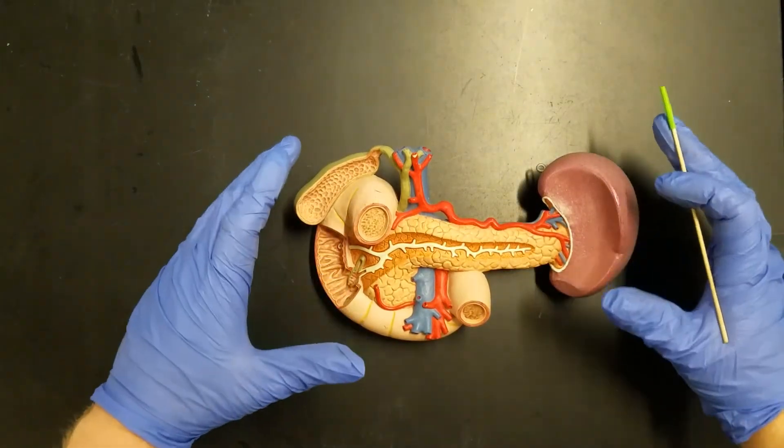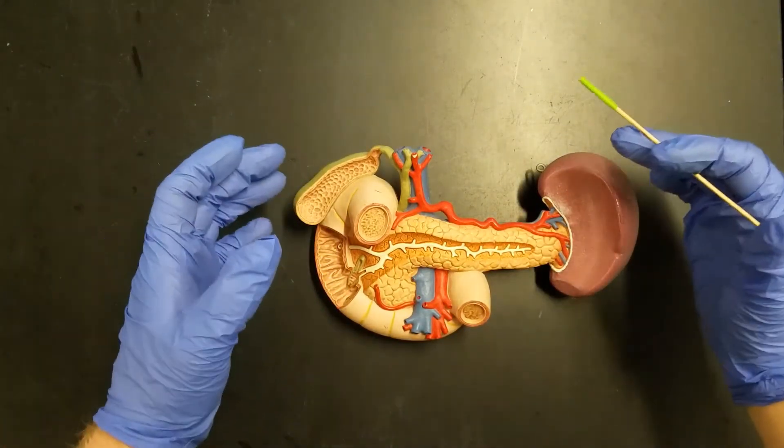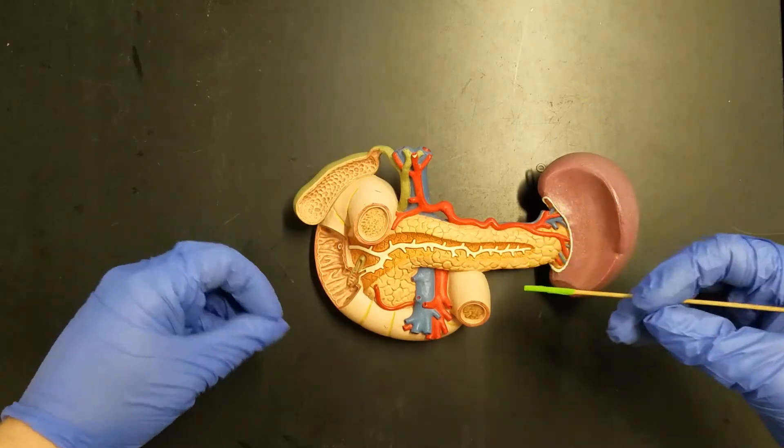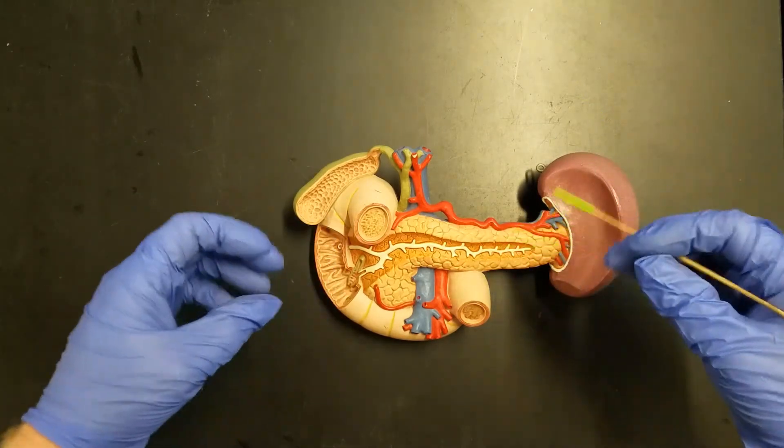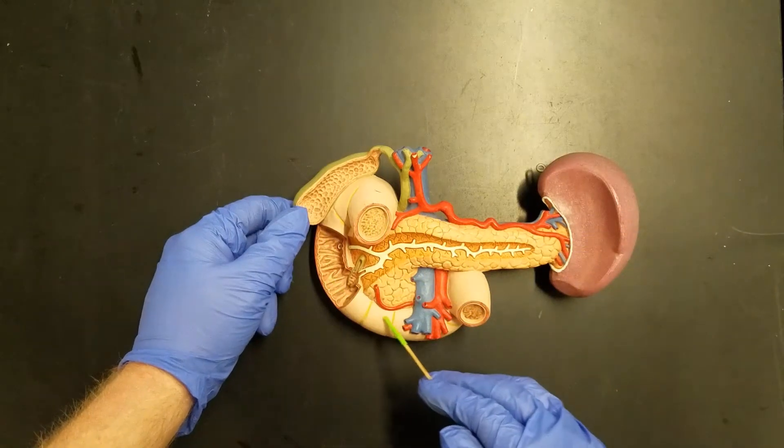Hello, and welcome to Anatomy with Dr. P. In today's video, we're going to be learning about the passageways that transport bile from the liver and gallbladder down into the duodenum.